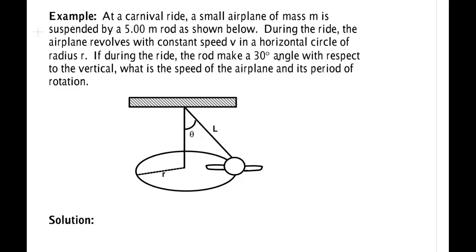In this problem we're going to work a circular motion problem using Newton's laws. At a carnival ride, a small airplane of mass M is suspended by a 5 meter rod as shown below. During the ride, the airplane revolves at constant speed V in a horizontal circle of radius R. If during the ride the rod makes a 30 degree angle with respect to the vertical, what is the speed of the airplane and its period of rotation?